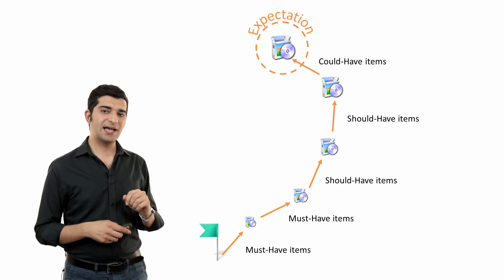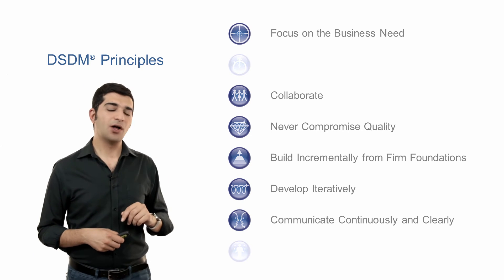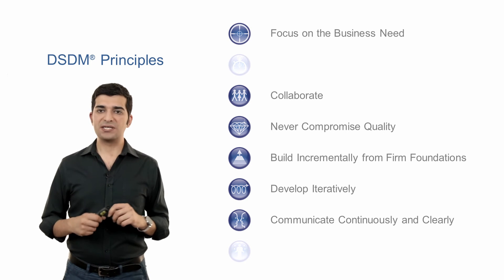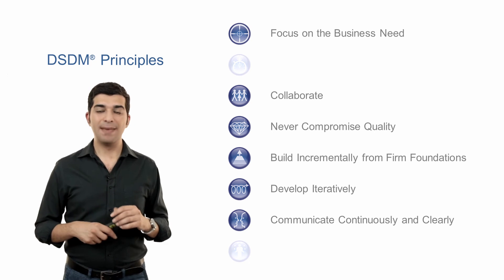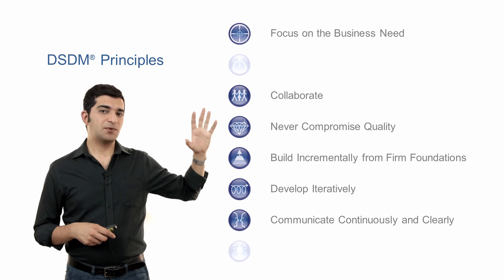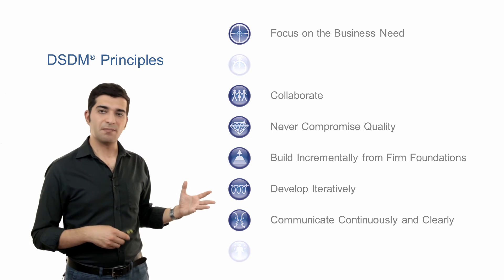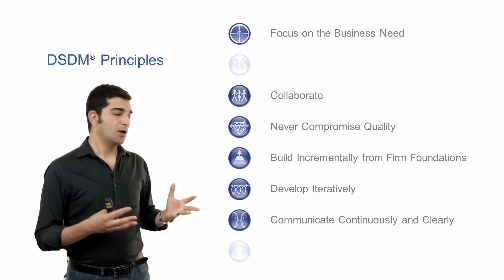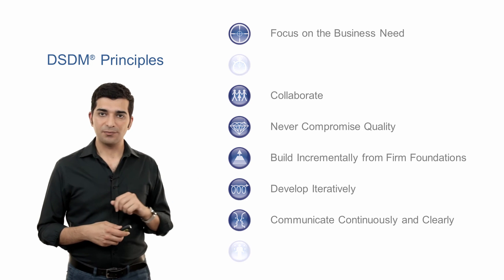We do that because of one of our core principles: the principle is to focus on the business need, instead of focusing on specialist activities, the number of features, or the amount of man-hours spent on the project. This principle applies to every project. Most of the principles in DSDM and other Agile systems apply to every kind of project — though not all of them, for example not incremental delivery and iterative development.